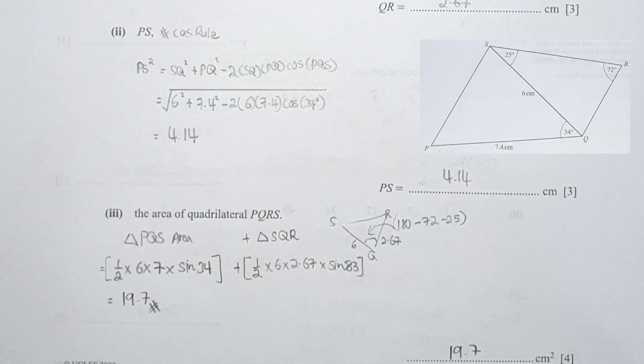For part 3, the area of quadrilateral PQRS: I use the irregular triangle area formula, half ab sin C. For triangle PQS, substituting ½ × 6 × 7 × sin(34°), and for triangle SQR, using ½ × 6 × 2.67 × sin(83°). The 83° comes from 180 − 72 − 25, since the total interior angles of a triangle is 180°. Through this calculation, the final result is 19.7.